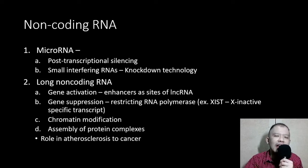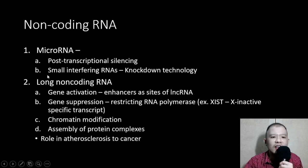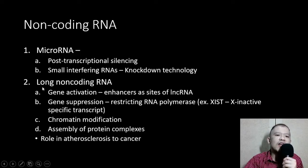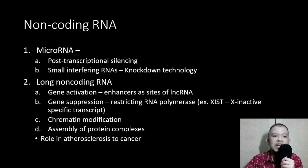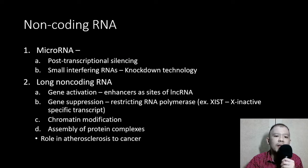For example, in the lab, if we want to produce a rat which doesn't have any hair, we use this knockdown technology to remove the RNA that is translated into the hair protein. Another form of non-coding RNA is what we call long non-coding RNA, which is very similar to microRNA, but its functions are varied — it can be used to activate a gene, suppress a gene, modify chromatin, and assemble protein complexes. All non-coding RNAs are involved in the control of different diseases, ranging from atherosclerosis to cancer.